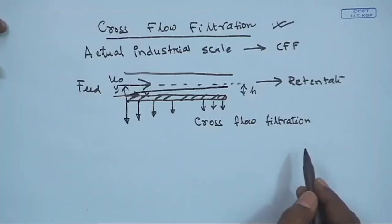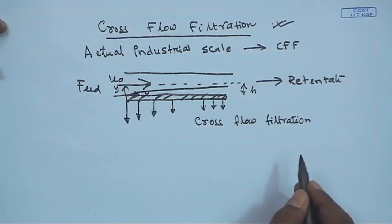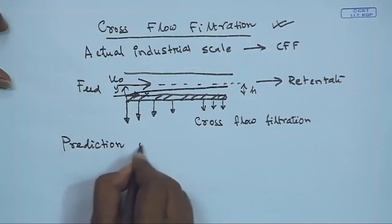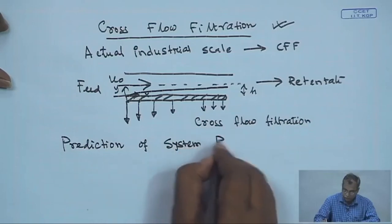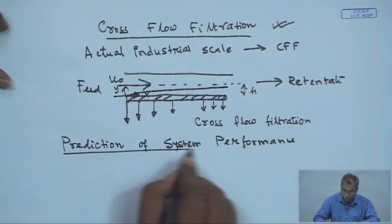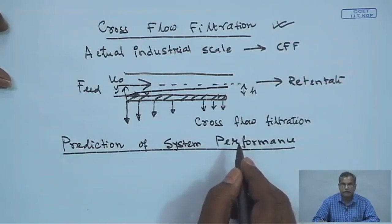Because cross flow filtration limits the growth of the mass transfer boundary layer, it reduces resistance against solvent flux and one can realize very high permeate flux and throughput. Cross flow systems are widely used in actual membrane filtration — all spiral wound modules, tubular modules, and hollow fiber modules are cross flow systems. We will now look into predicting system performance using film theory combined with the osmotic pressure model.